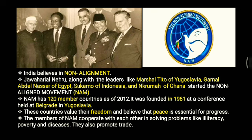The members of this organization kept away from the USA and USSR and did not interfere in their matters. NAM has 120 member countries as of 2012, and it was founded in 1961 at a conference held at Belgrade in Yugoslavia. The members of NAM are basically small and developing countries.